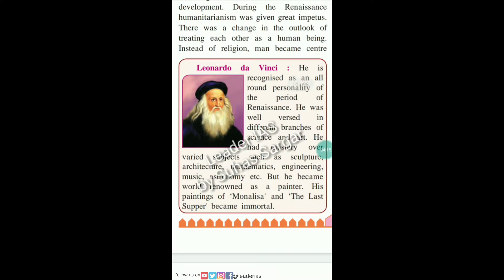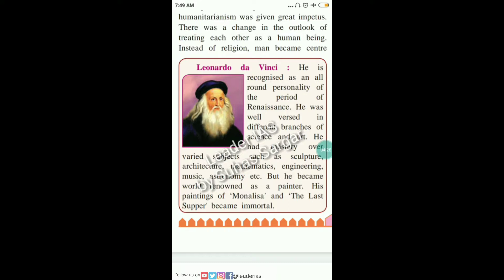This picture shows Leonardo da Vinci. He is recognized as an all-round personality of the period of Renaissance. He was well-versed in different branches of science and art, and had mastery over subjects such as sculpture, architecture, mathematics, engineering, and music, astronomy, etc.